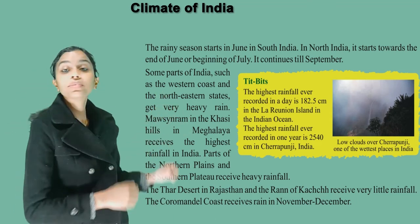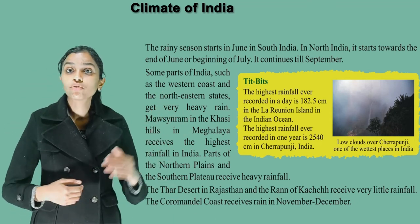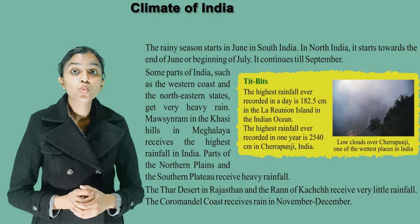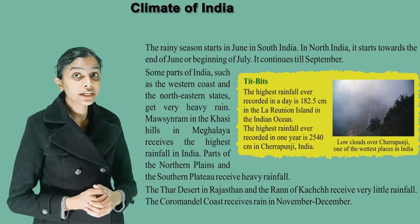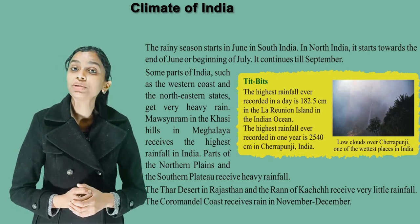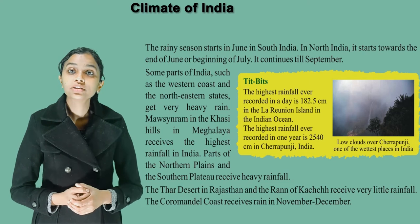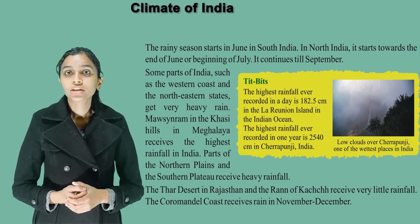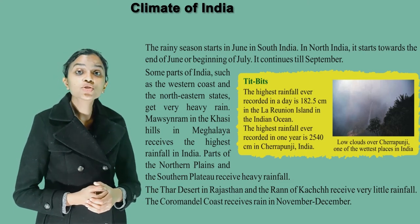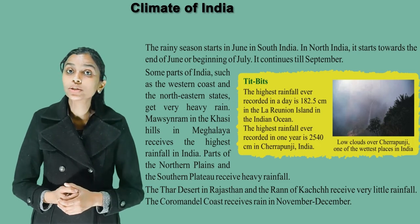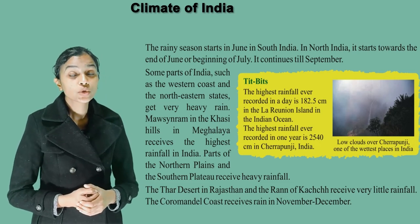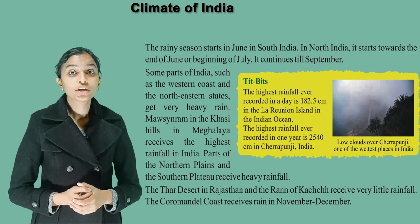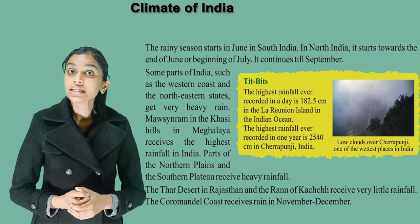It's time for Tits and Bits. The highest rainfall ever recorded in a day is 182.5 cm in the La Reunion Island in the Indian Ocean. The highest rainfall ever recorded in one year is 2540 cm in Cherrapunji, India.